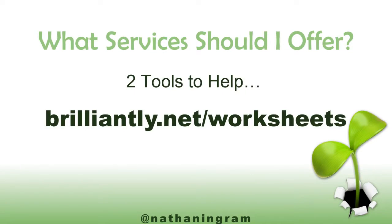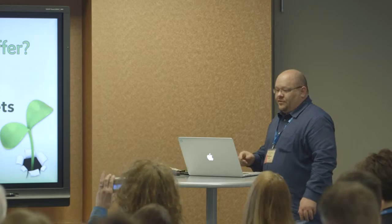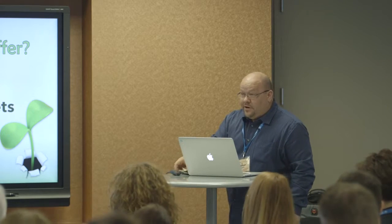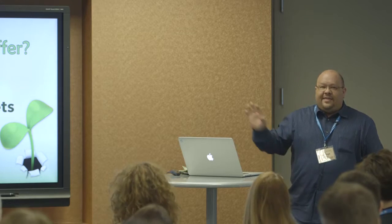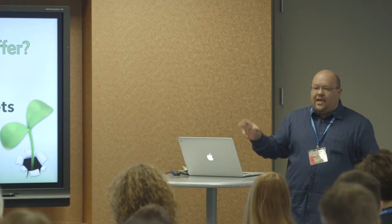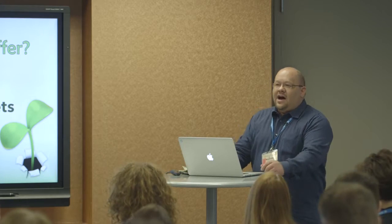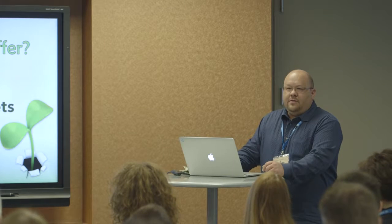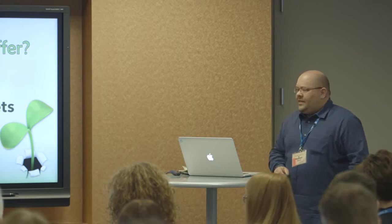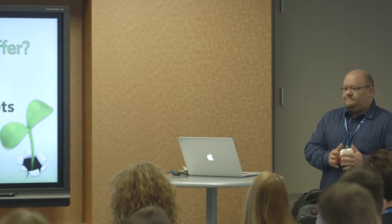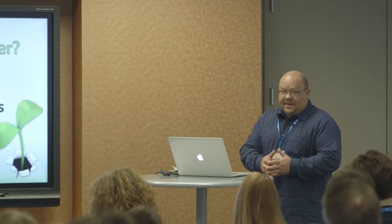Here are two tools. You can go now to brilliantly.net/worksheets — it's a link to a Dropbox PDF. These worksheets will help you think through the process of what services to offer your recurring income clients. It's a six-page PDF.